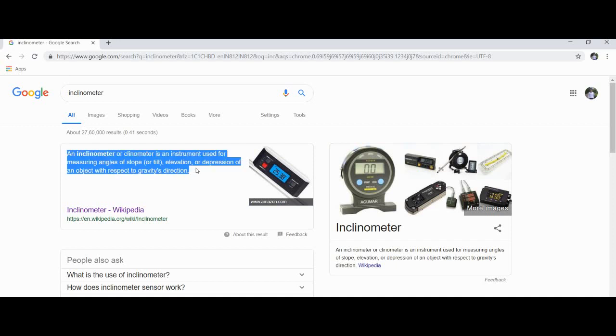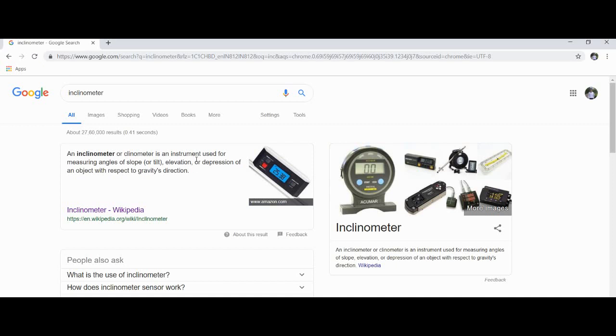Let's ask our almighty Google. So an inclinometer is an instrument used for measuring angles or slopes or tilt, elevation or depression of an object with respect to earth's gravity.